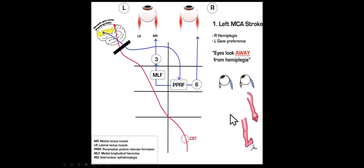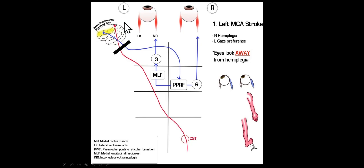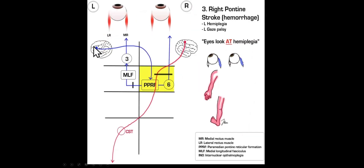That's what we see in an MCA stroke. The reason I think that's more helpful is when you're walking into the emergency room to see a patient who's had a stroke, you don't have a brain scan yet, you don't know where the stroke is. So if the eyes are looking away from the hemiplegia, you know that almost certainly has to be a middle cerebral artery stroke.